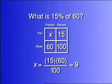Now we have a proportion and we simply cross multiply the 15 and the 60 and divide by the 100 to find that x equals 9.